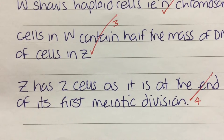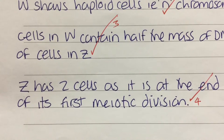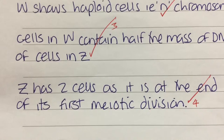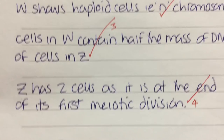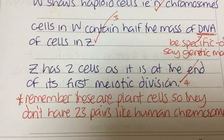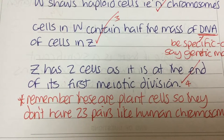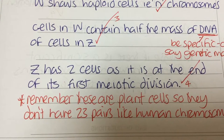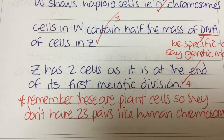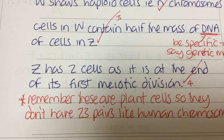According to the examiner's report, a lot of students lost marks here. They started referring to 23 pairs of chromosomes, forgetting that we were actually looking at plant cells. My top tip here is to go back and read the stem of the question and stick to it.